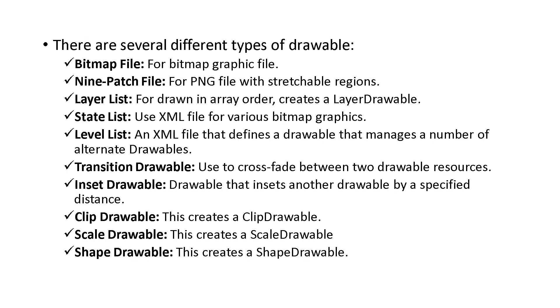Different types of drawable resources include: bitmap file, 9-patch file, layer list, state list, level list, transition drawable, insert drawable, clip drawable, scale drawable, and shape drawable. In today's class we discussed Android layouts and drawable resources. This is a simple topic — hope it was clear for you. Thank you.